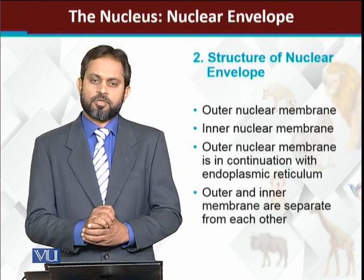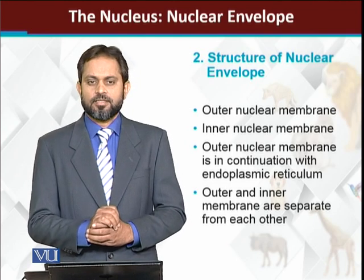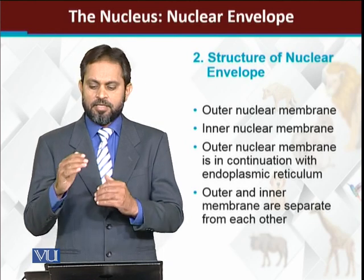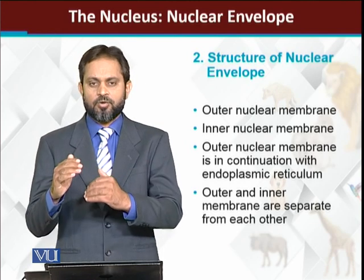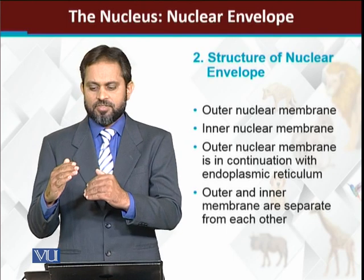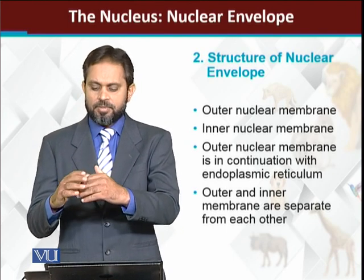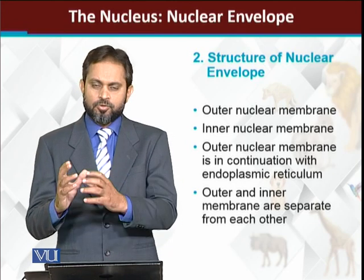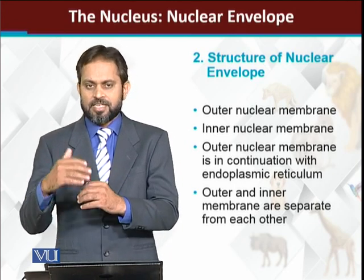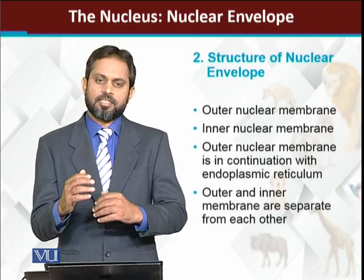The inner nuclear membrane is separated from the outer nuclear membrane. Both are completely separate — there is a proper space between them, so they are not directly connected to each other. The inner nuclear membrane actually touches the environment of the nucleus, while the outer nuclear membrane touches the cytoplasm.